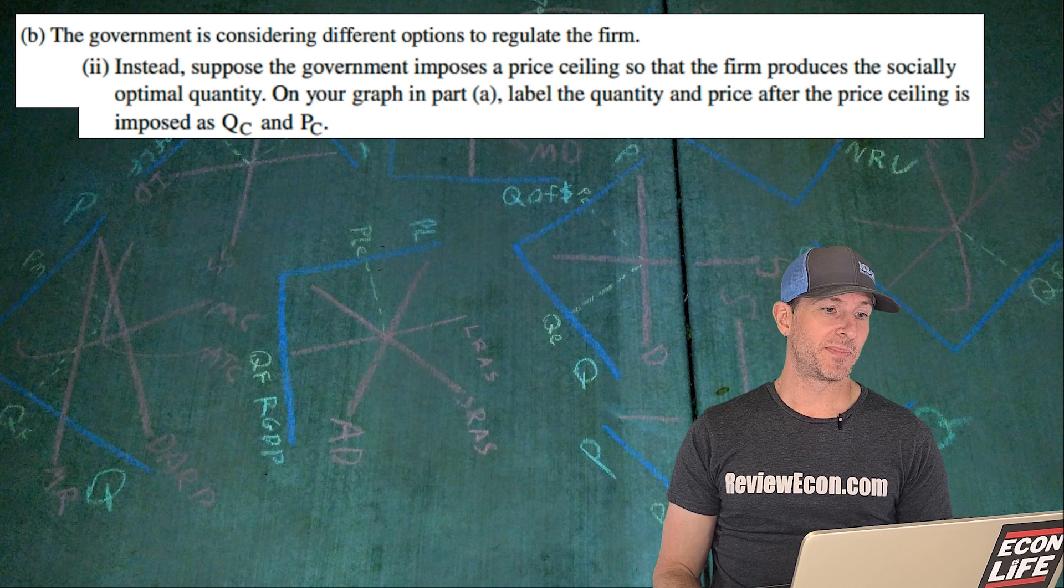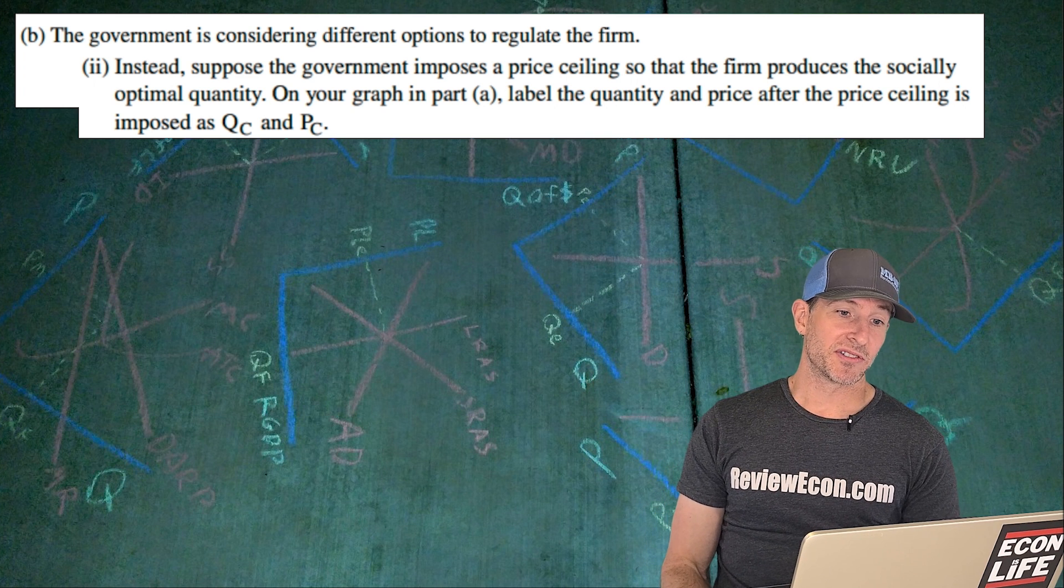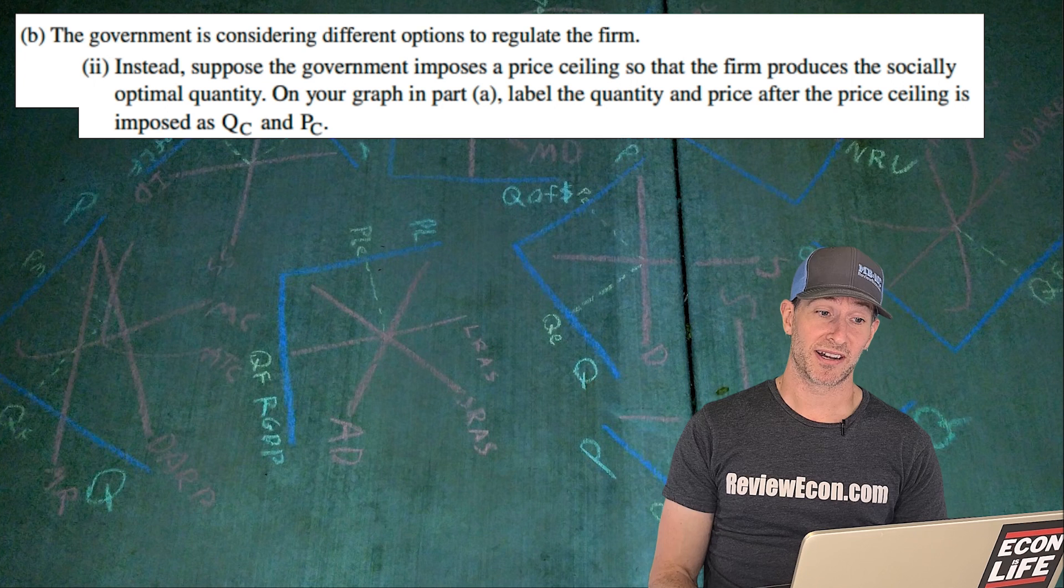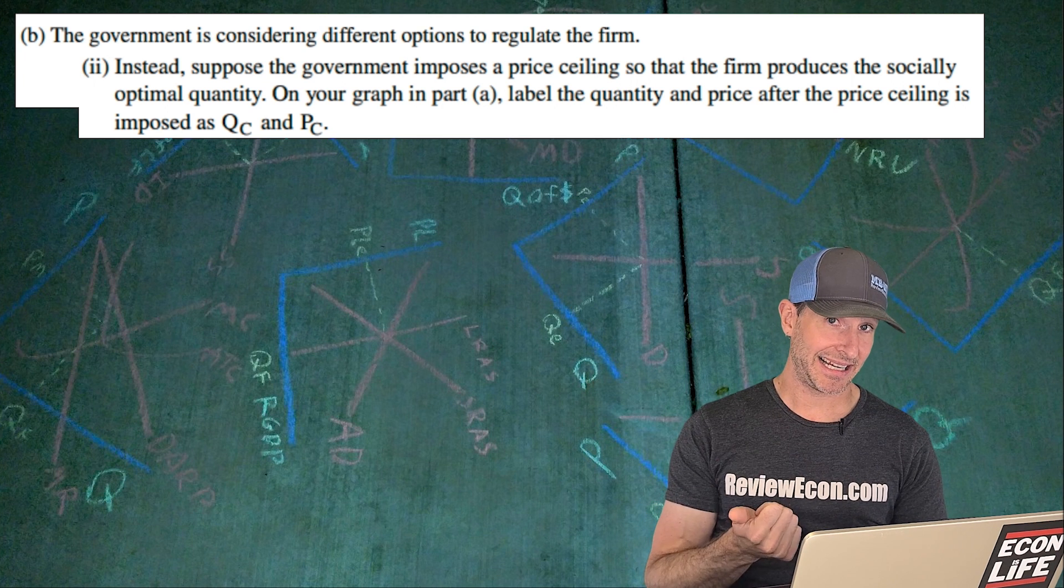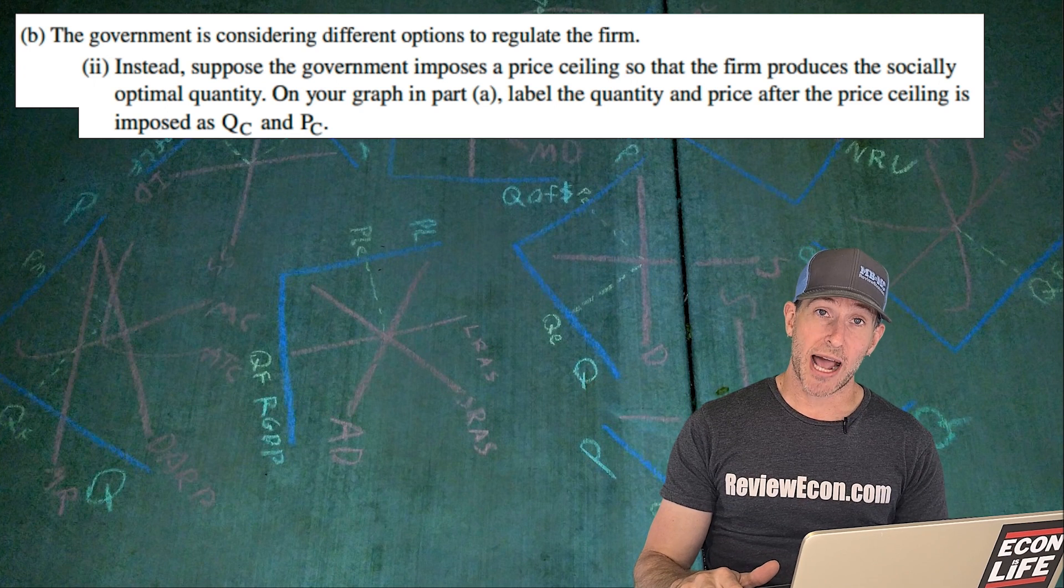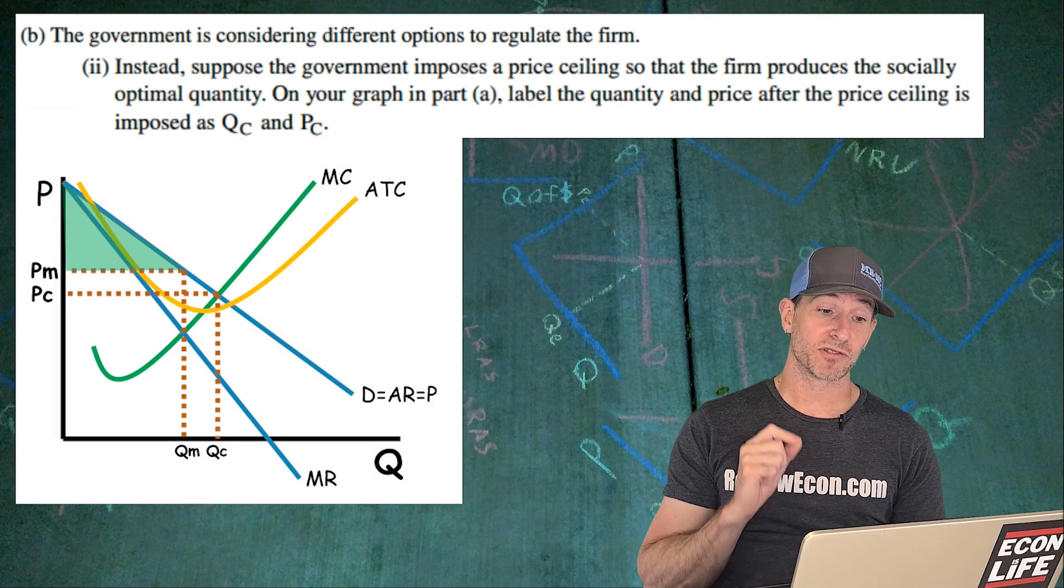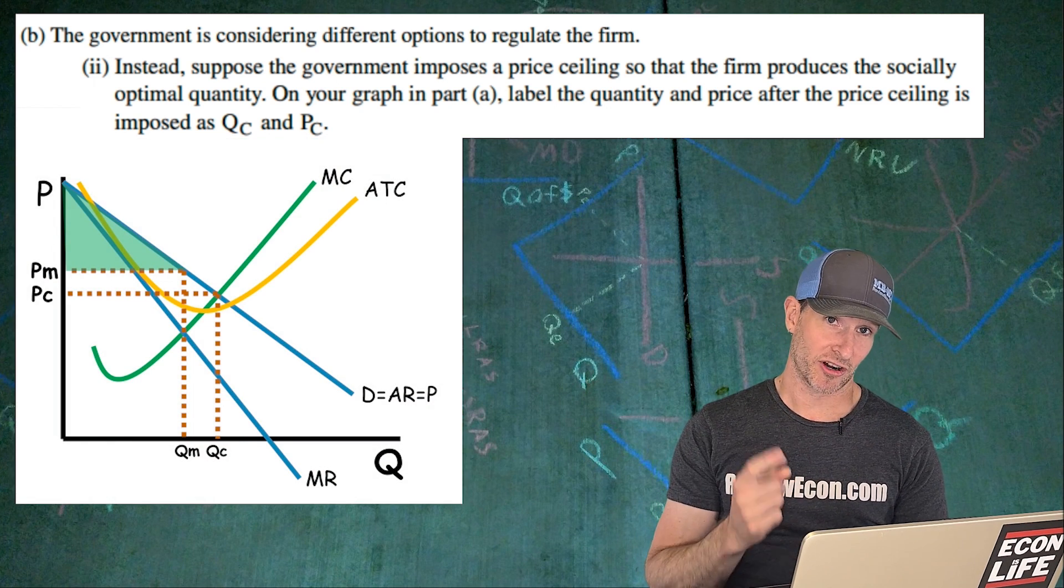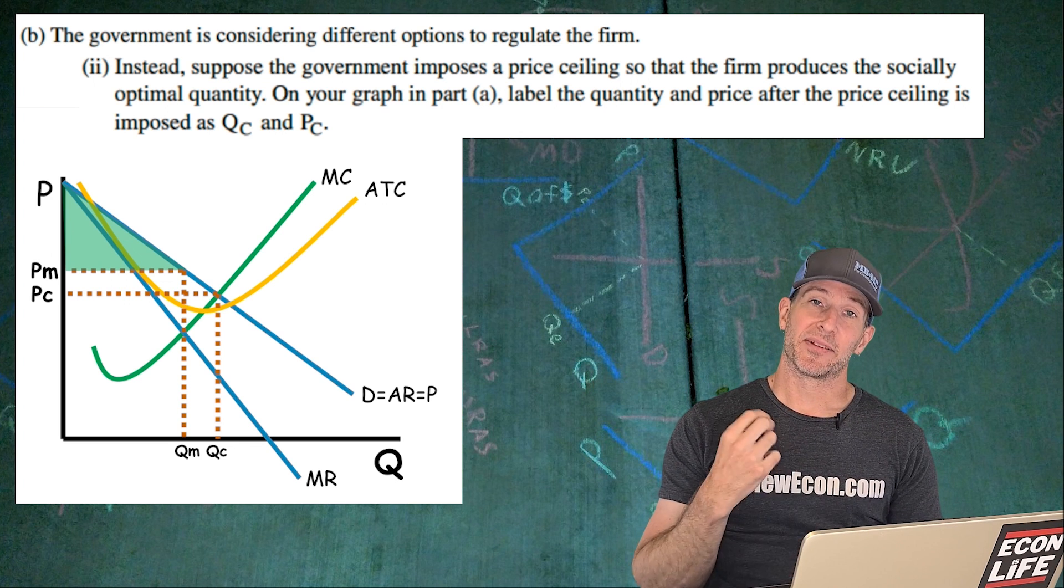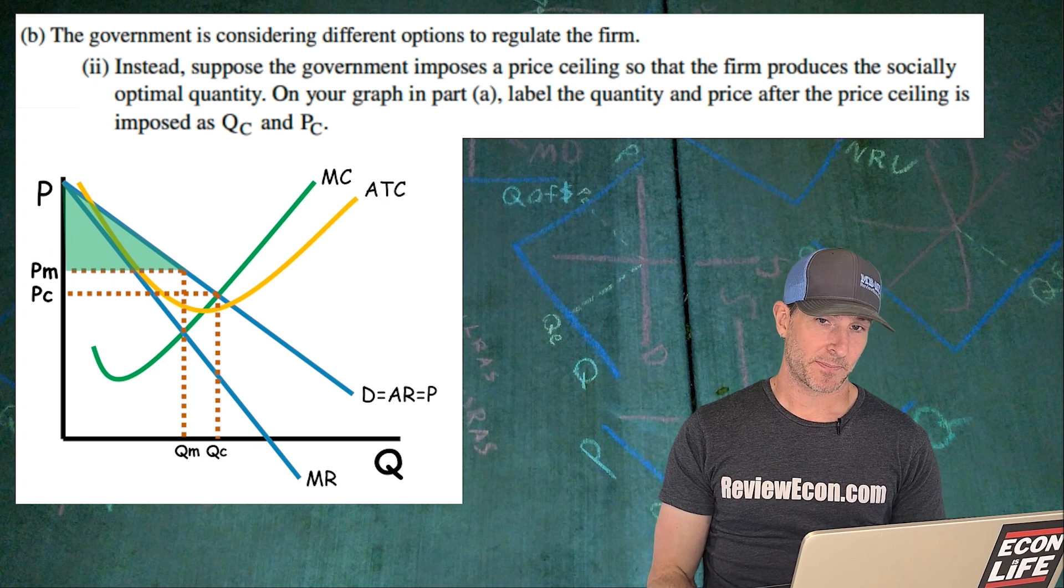On to the next part of B. Instead, suppose the government imposes a price ceiling so that the firm produces the socially optimal quantity. We're going to label that price ceiling PC and the quantity that would be produced as QC. So socially optimal is where the price equals the marginal cost or where the demand curve intersects that marginal cost curve. So there it is there at QC and the price there is PC.